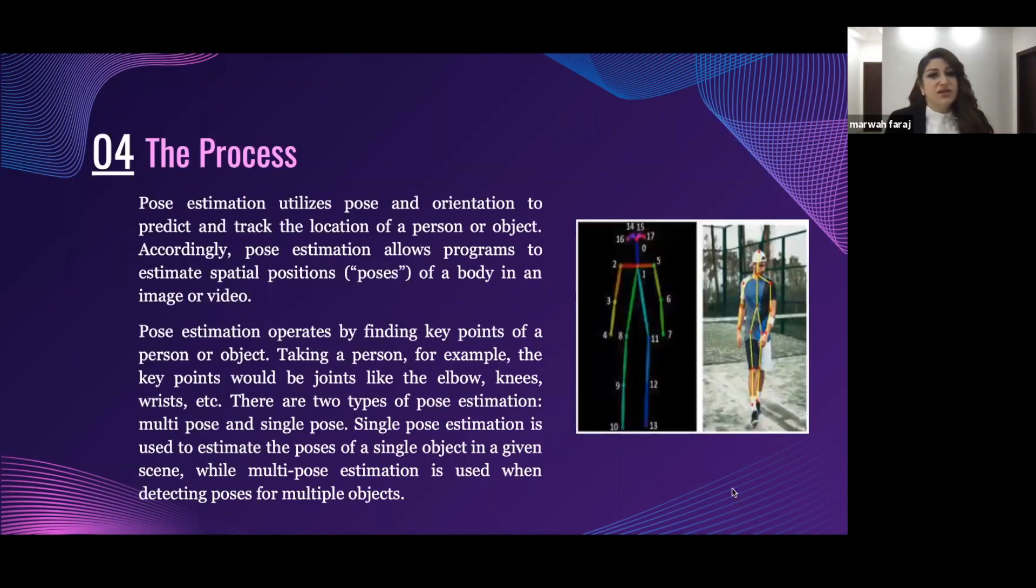Pose estimation applies pose and orientation to predict and track the location of a person or object. Accordingly, pose estimation allows programs to estimate spatial positions, poses, of a body in an image or video. Pose estimation operates by finding key points of a person or object. Taking a person, for example, the key points would be joints like the elbow, knees, wrist, etc.